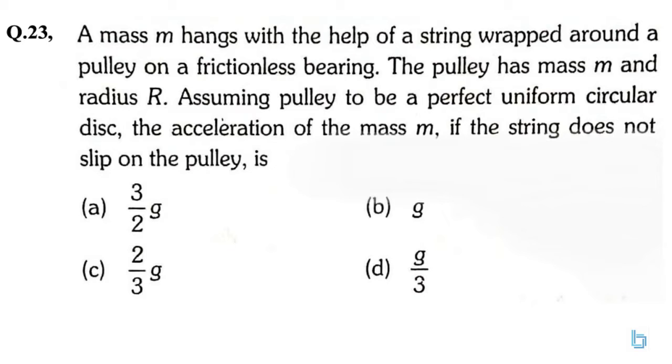Mass M hangs with the help of a string wrapped around a pulley on a frictionless bearing. The pulley has a mass M and radius R. Assuming pulley to be a perfect uniform circular disc, the acceleration of the mass M if the string does not slip on the pulley is.